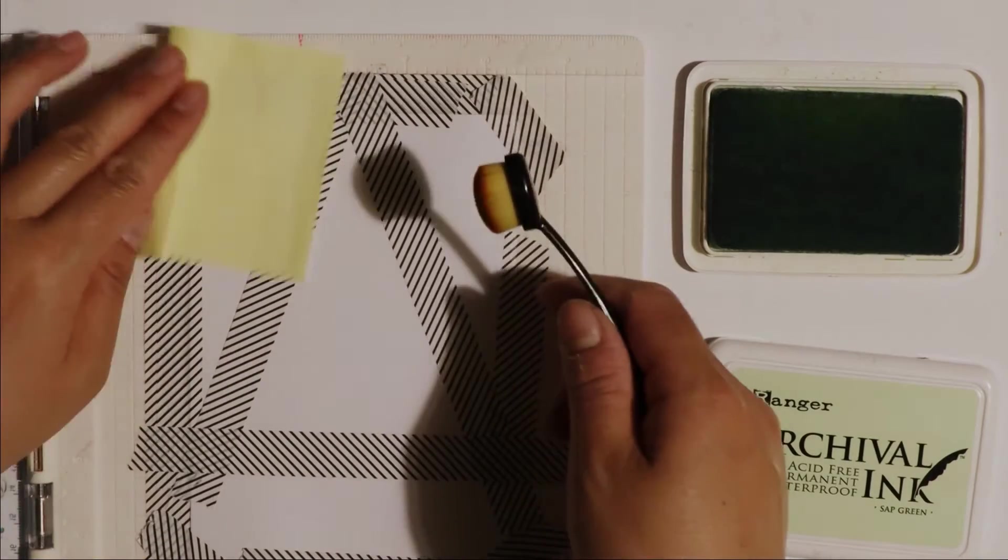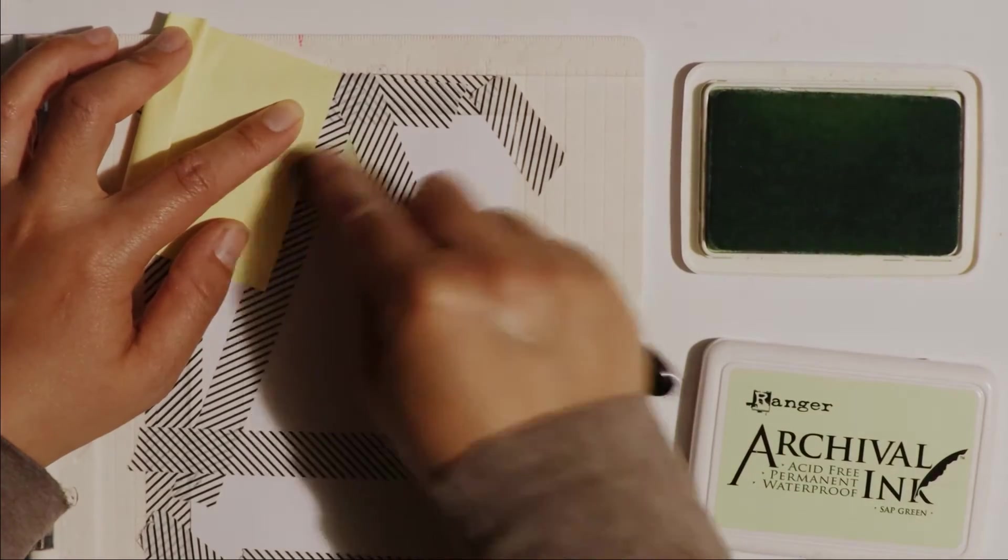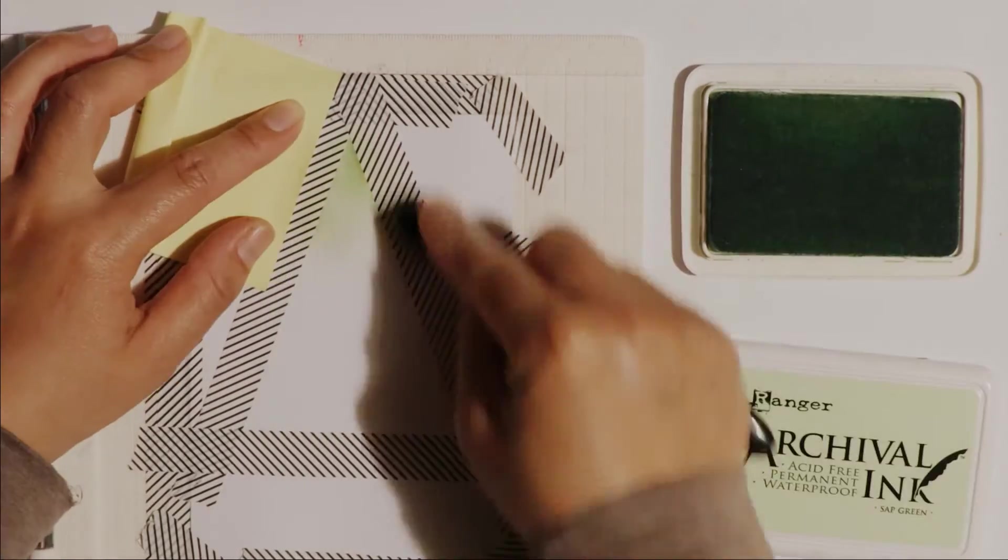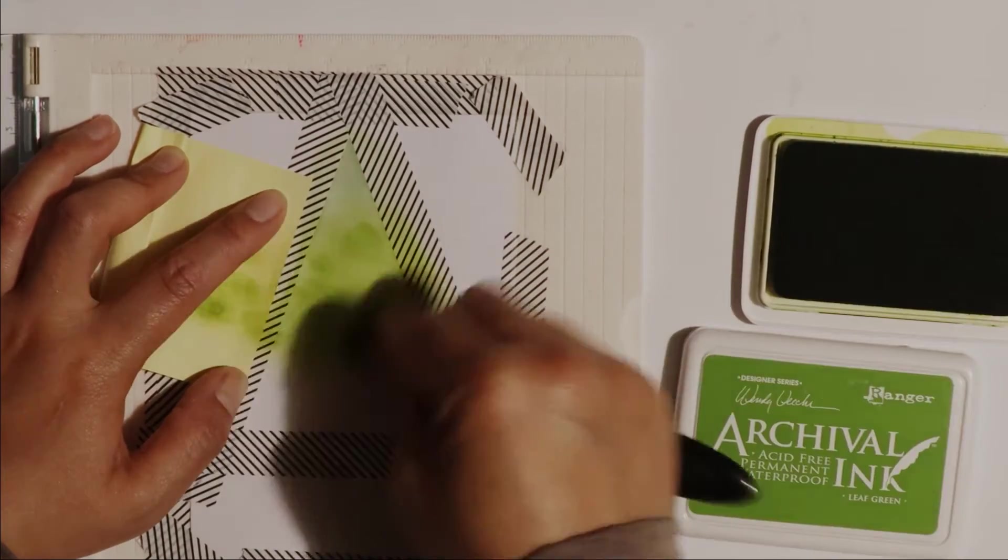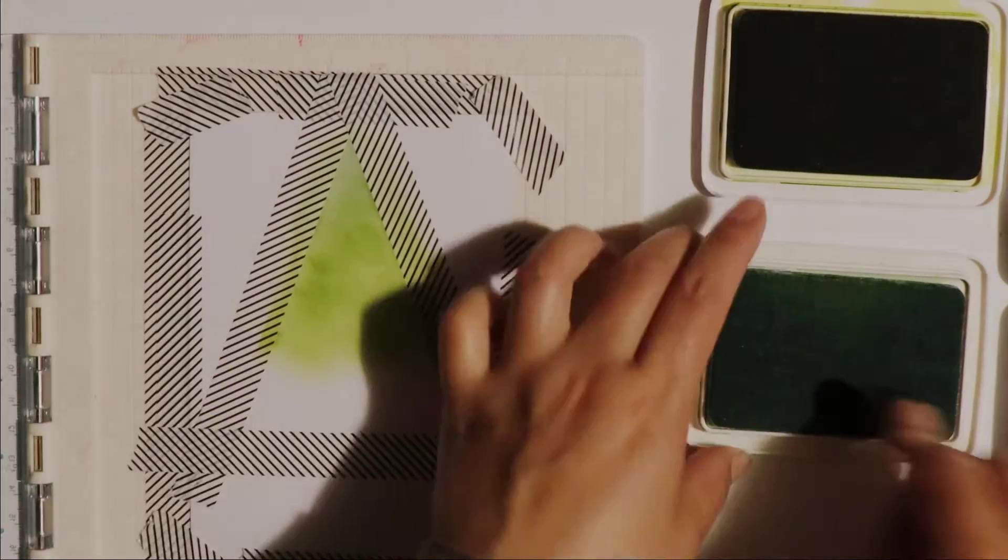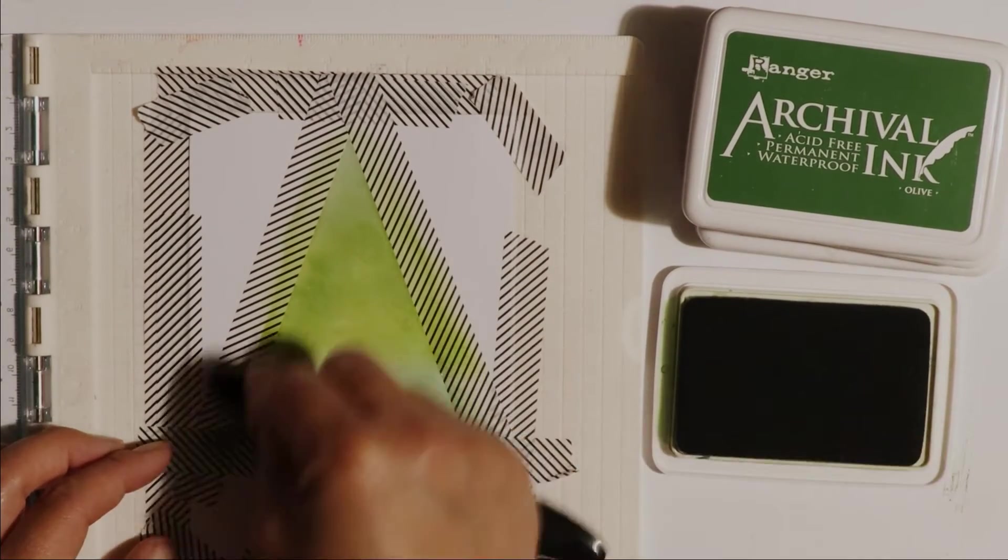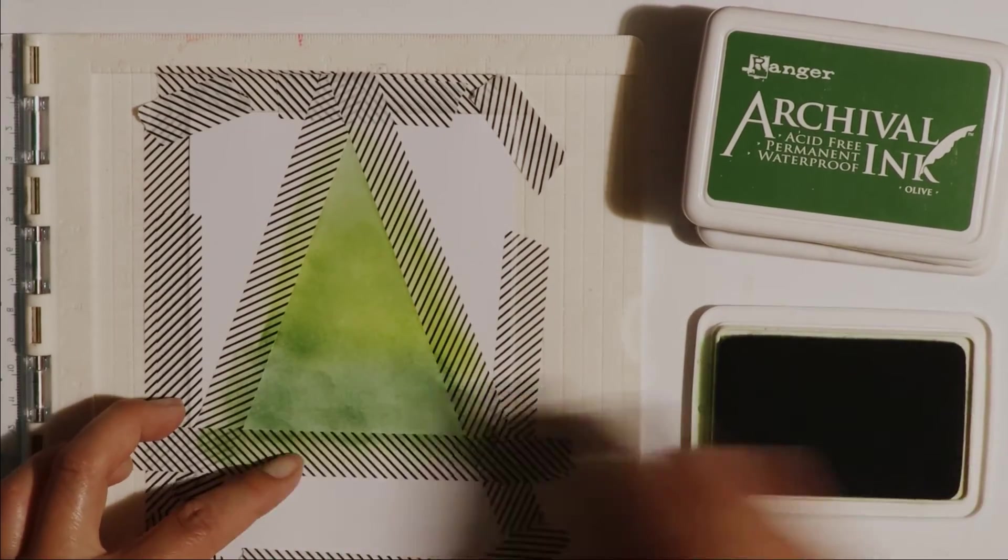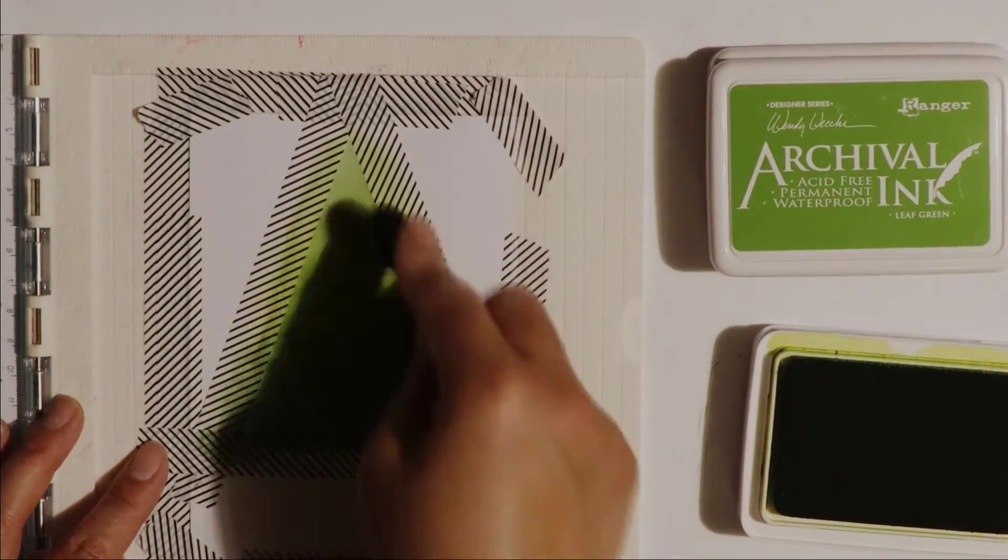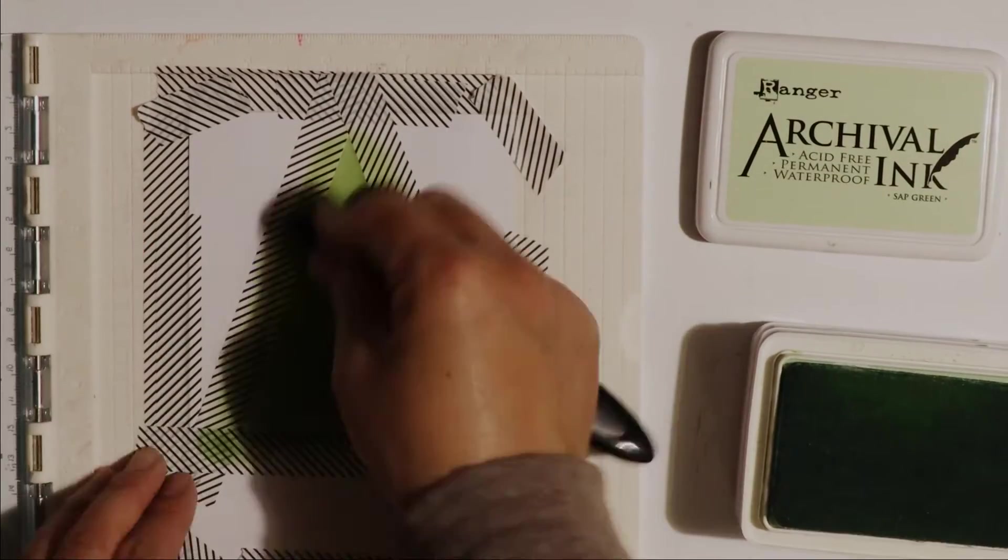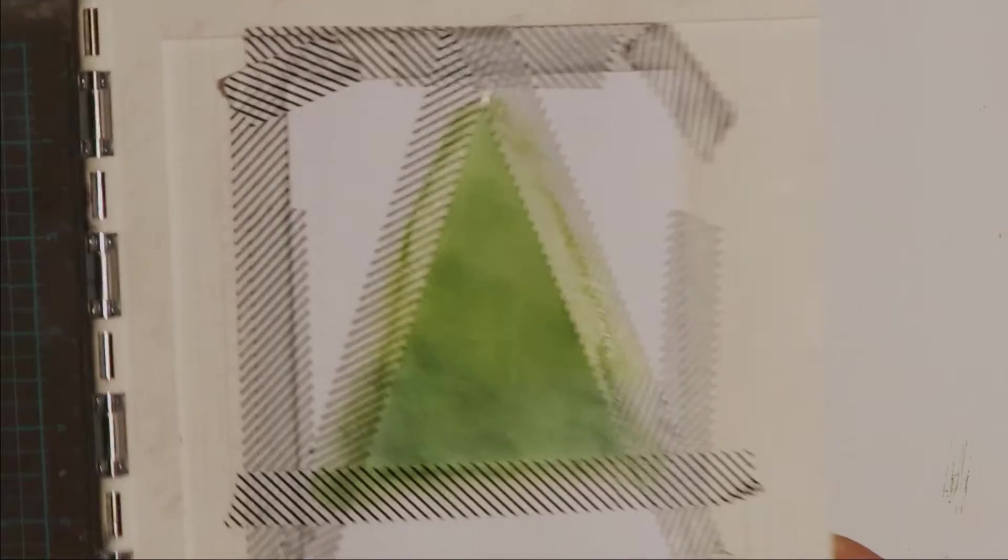I'm just going to put down a post-it note here to make sure that I don't go over the edge of that master triangle and onto areas of the card front that I don't want color to appear. I'm just going to speed up the video as I do the blending for the background. So now that I'm happy with the background it's on to the next step of making this card.